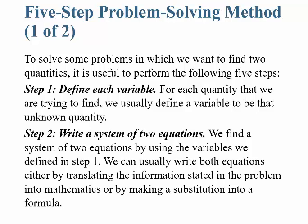Step 2: we're going to write a system of two equations. We find the system by using the variables defined in Step 1. We can usually write both equations either by translating the information stated in the problem into mathematics or by making a substitution into a formula. You're just going to be looking for the keywords to translate the problem into two different mathematical equations.